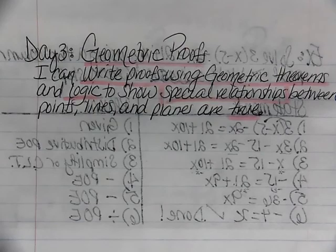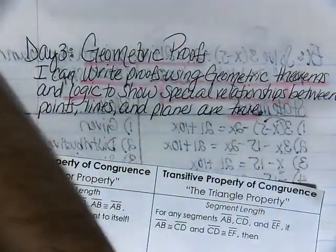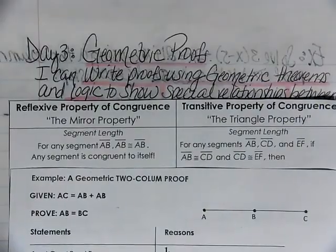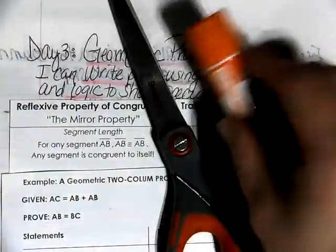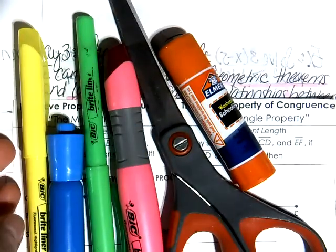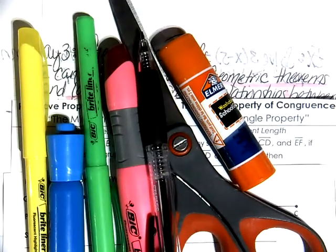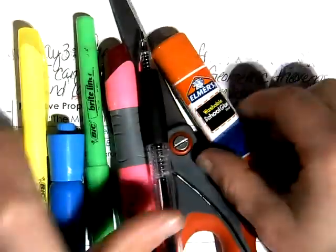For today's lesson, you will need the following materials. First of all, you will need to have printed out your cutouts for geometric proofs — that's day three. You will need scissors, a glue stick, some color like highlighters for emphasis, and something to write with. Please feel free to pause the video and gather these materials before you get started.